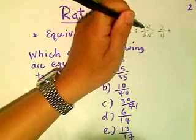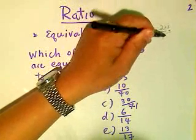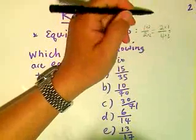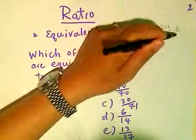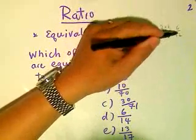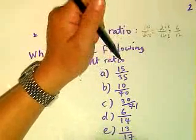Likewise, another equivalent ratio to 1 to 2 or 2 to 4, let's say if we multiply top and bottom by 3. 2 times 3 is 6, and 4 times 3 is 12. So 6 over 12 is the same thing as saying 1 over 2, or 2 over 4.